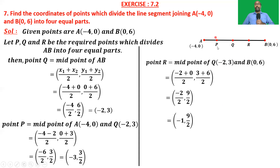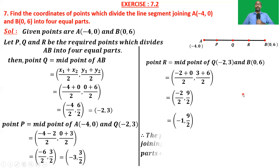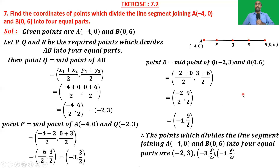So we got all three points which divide AB into four equal parts. The points are (-2, 3), (-3, 3/2), and (-1, 9/2).